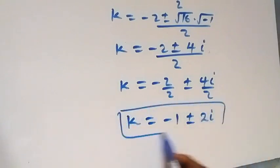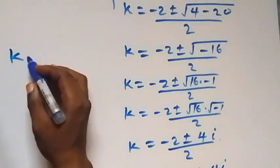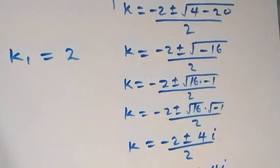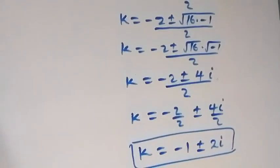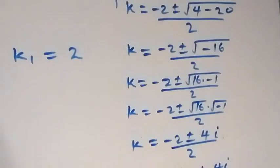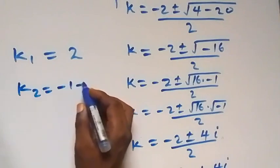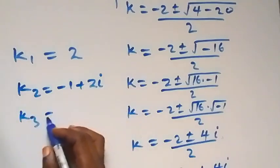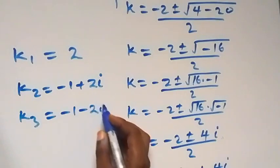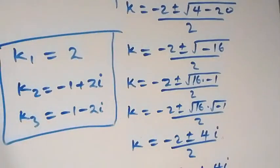So here we have two complex solutions. All together, we have three solutions. The first one: k₁ equals to 2. The second: k₂ equals to minus 1 plus 2i. And k₃ equals to minus 1 minus 2i. So we have one real solution and two complex solutions.